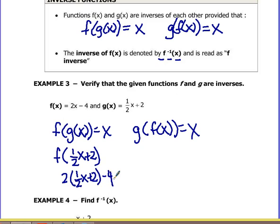If we distribute, we're going to get 2 times 1 half is 1 or 1 x. 2 times 2 is 4, so x plus 4 but then minus 4 and we get x. So that direction works. The functions cancel each other out. What about the other direction?